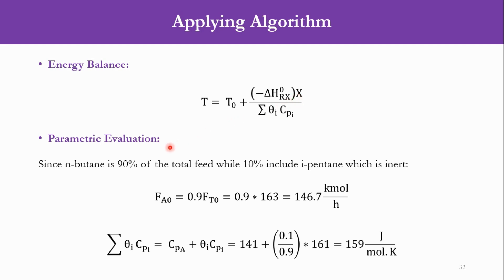We have been given that normal butane is 90% of the total feed while isopentane is 10%. Or we can say the mole fraction of normal butane is 0.9 while that of isopentane is 0.1 in the system. So accordingly, we can say that FA0/FT0 = 0.9 because it represents the fraction or amount of butane in the system. We are interested with the butane quantities, not with the pentane quantities. FA0 = 0.9 × FT0. Now the total flow rate is 163 kmol per hour. So out of that, 90% contributes towards normal butane, so we multiply 0.9 × 163 and that equals 146.7 kmol per hour.